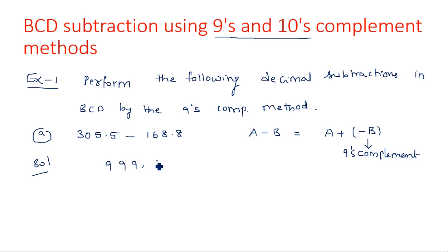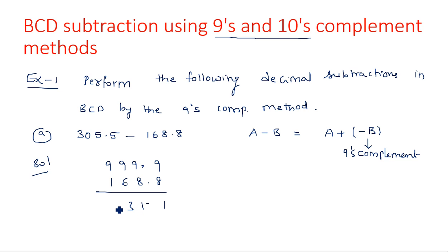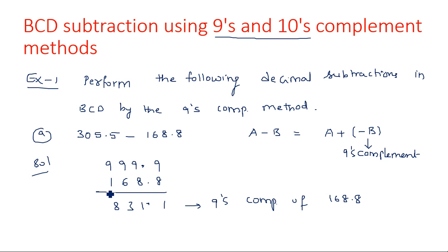For nines complement, the format of 9s must match the number of digits of the given number: 999.9 minus 168.8. So: 9 minus 1 is 8, 9 minus 6 is 3, 9 minus 8 is 1, and 9 minus 8 is 1, giving 831.1. This is the nines complement of 168.8. This was a negative number and is now converted into a positive number.